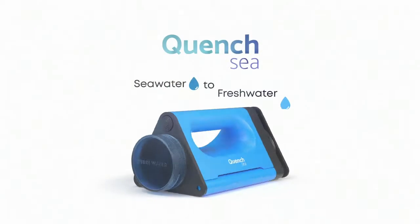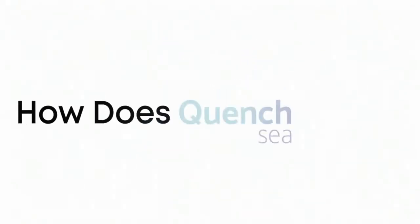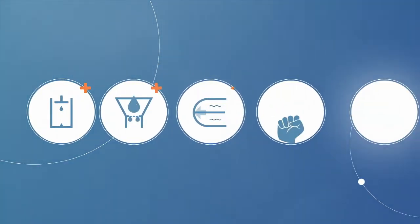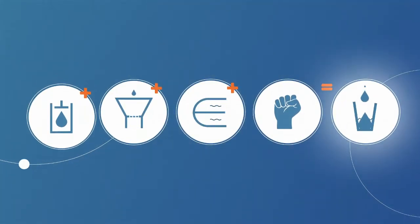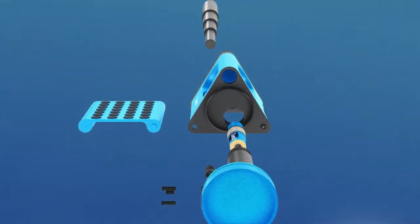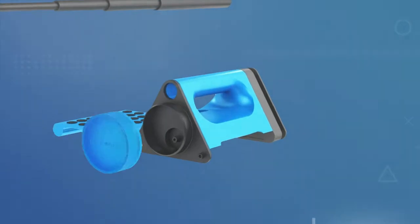QuenchSea Seawater to Freshwater. How does QuenchSea work? QuenchSea is an innovative seawater desalination device that combines a hydraulic system, triple pre-filtration process and a small reverse osmosis membrane to desalinate seawater into fresh water using human power.